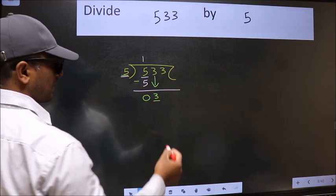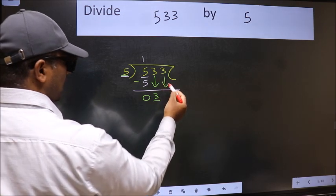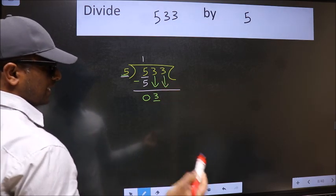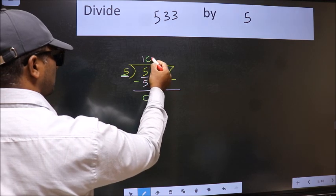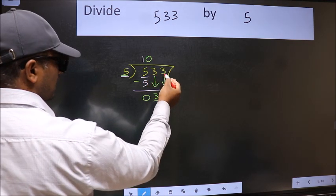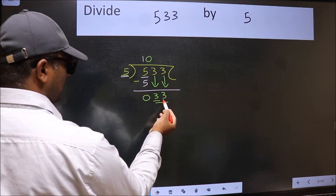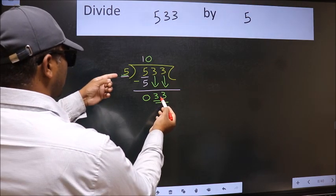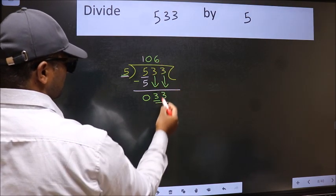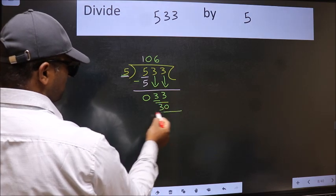And the rule to bring down the second number is we should put zero here, then only we can bring this number down. Now 33. A number close to 33 in five table is five six thirty.